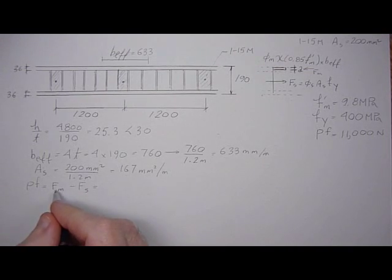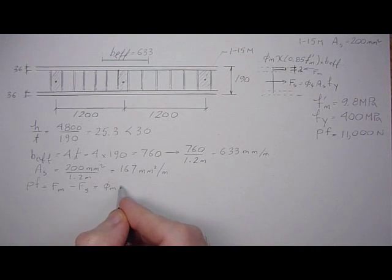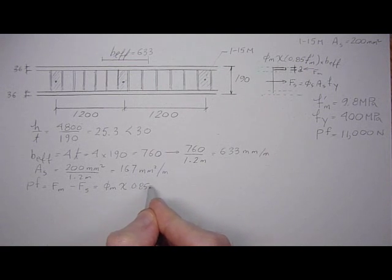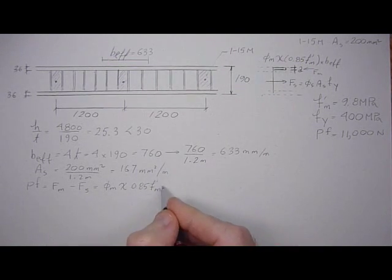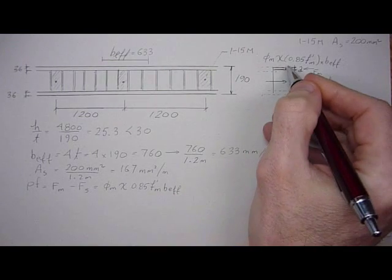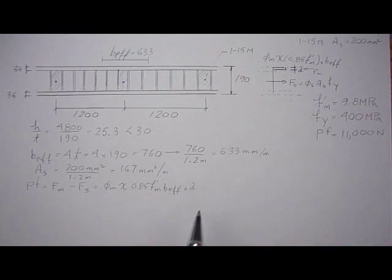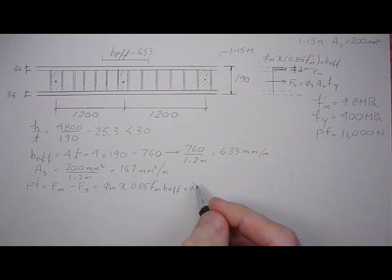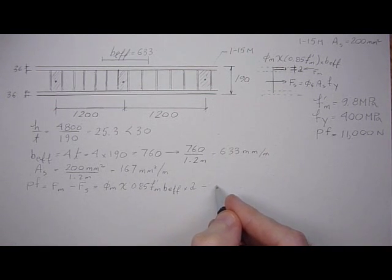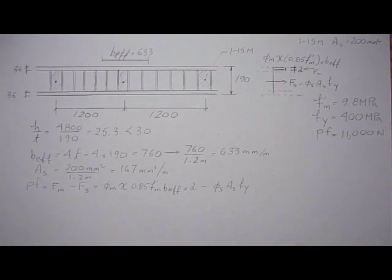And Fm is the stress block. So phi of the mortar, times 0.85, times F′m, times B effective, times the height of the stress block, A. A is an unknown in this case. And then we would find the force in the steel, which is minus phi of the steel, area of the steel, F yield.